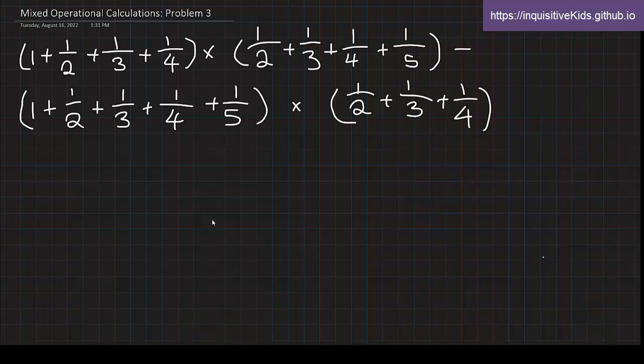For example, we have one, right? One. This one doesn't appear in every single one of these parentheses, but it does appear another time. And there's just a lot of repeating and different combinations out of the five numbers: one, one-half, one-third, one-fourth, and one-fifth.